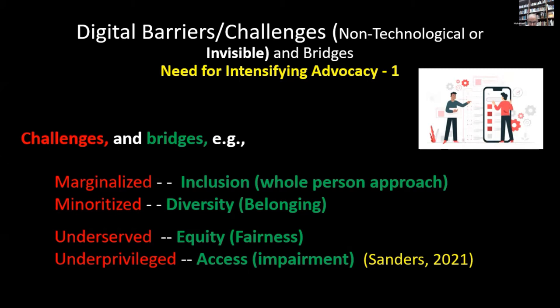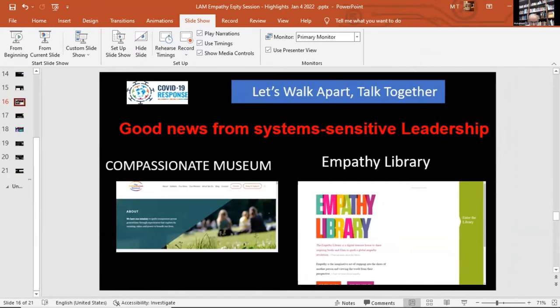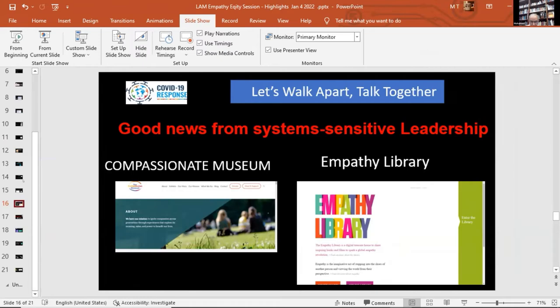We are reminded by one author, Sanders, that these issues are not casual — they are real human rights issues, to be considered for their implications by our leaders. The good news I mentioned is about system-sensitive leadership, which is demonstrating awareness of the need for empathy, equity, and the needs of the have-nots. There is a long list of compassionate museums and empathy libraries, though I have not included all for shortage of time.